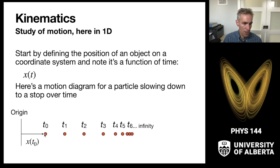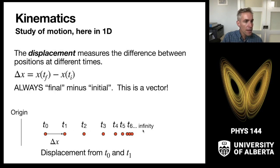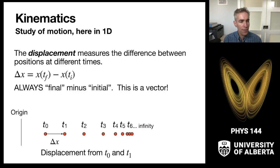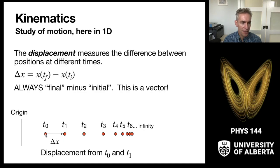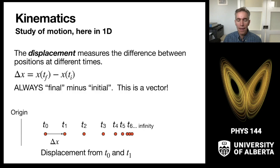We define position as the location of a particle relative to the origin, and we indicate it at t=0 and onward. The displacement of a particle is the measurement of the difference in positions at different times, measured relative to the origin. We always construct our vectors as final minus initial. So the displacement from t0 to t1 is the position of the final minus the position of the initial — the vector that connects these two particles together.